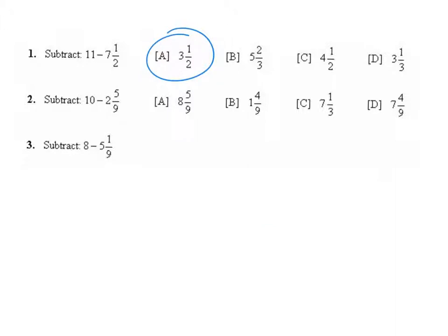Question 2 is 10 minus 2 and 5 ninths. Again, I'm going to line everything up according to place values. I can't take 5 ninths away from nothing, so I am going to regroup.